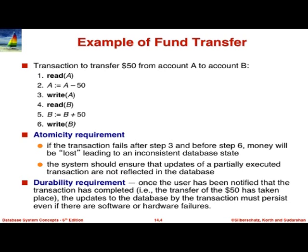Sticking with the example of reading A, subtracting from A, and adding to B: the atomicity requirement says if this sequence fails after step 3 but before step 4, you've subtracted from A but not updated B — you've lost 50 rupees from the account, which is not acceptable. Durability means once you've finished the whole transaction and updated A and B, the database is not allowed to forget about it. A user who has transferred money would be very upset if it did.